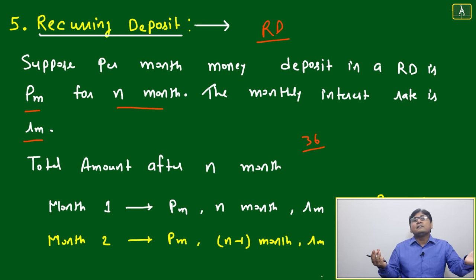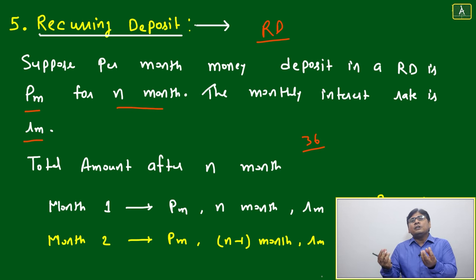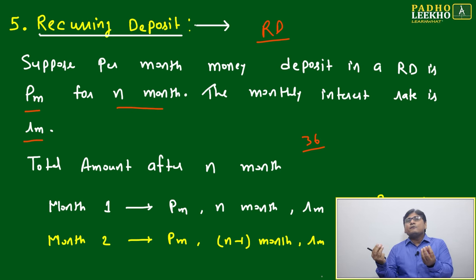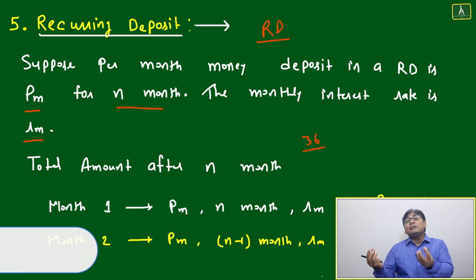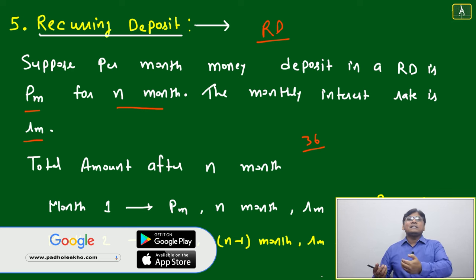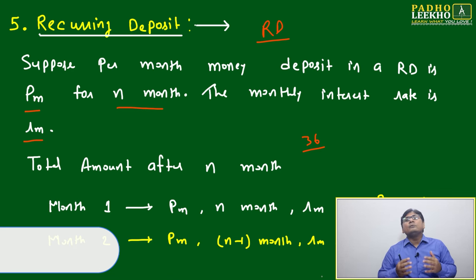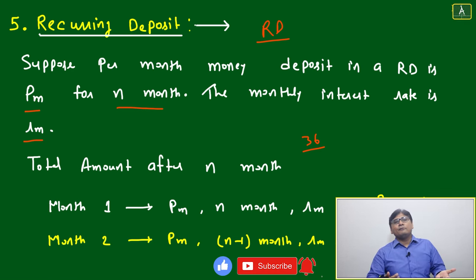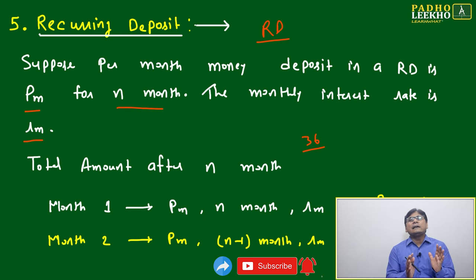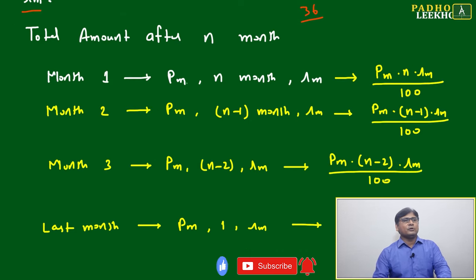For the third deposit, whatever you deposit in the third month, you get interest for only 33 months. The fourth month deposit gets only 32 months. As you keep depositing, each subsequent deposit gets one month less of interest. You add all of these up to get the total matured amount.